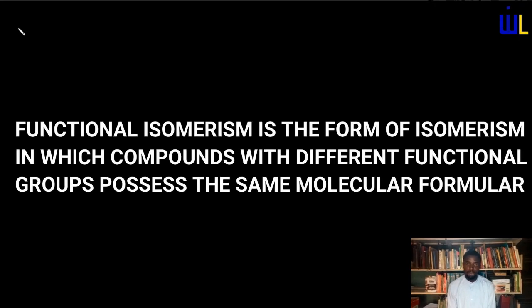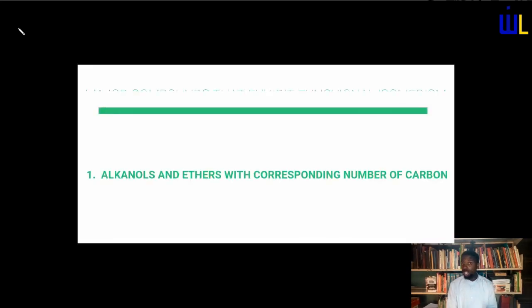The next form of isomerism we are going to consider is functional isomerism. Functional isomerism is a form of isomerism in which compounds with different functional groups possess the same molecular formula. This is exhibited majorly by three groups of compounds: the relationship between an alkanol and an ether, between an alkanoic acid and an ester, and between an aldehyde and a ketone.